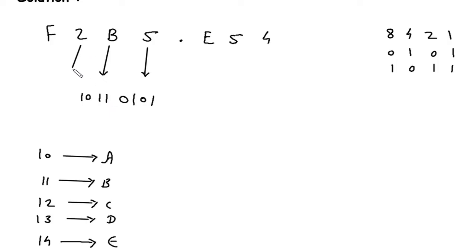Then 2. So 2 means this will be 0, 0, 1, 0. The binary for 2 is 0010.